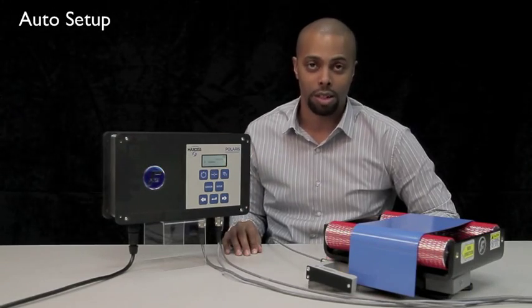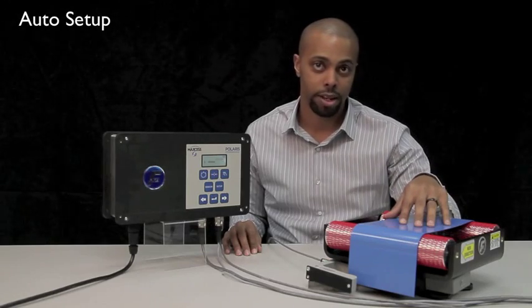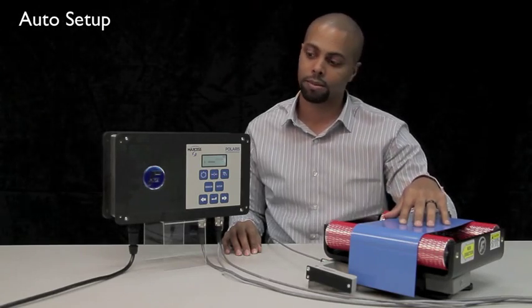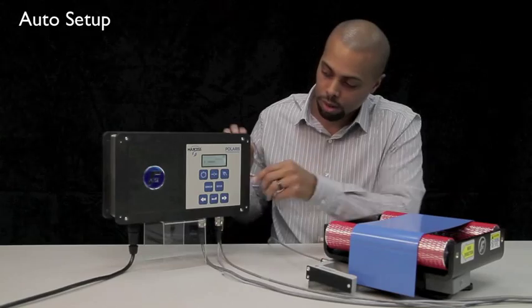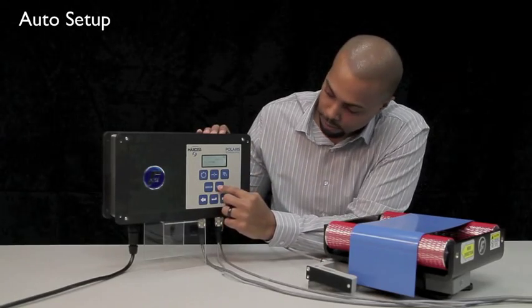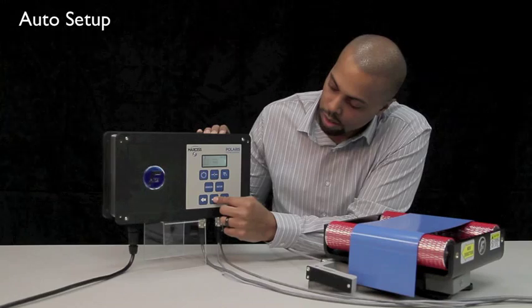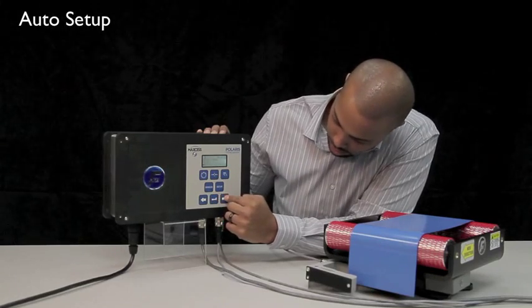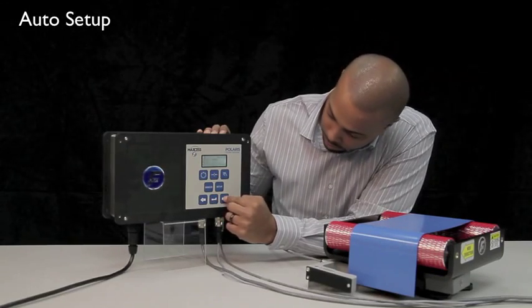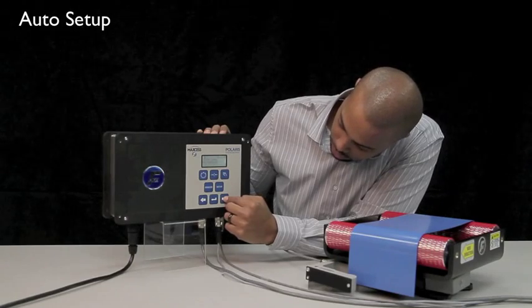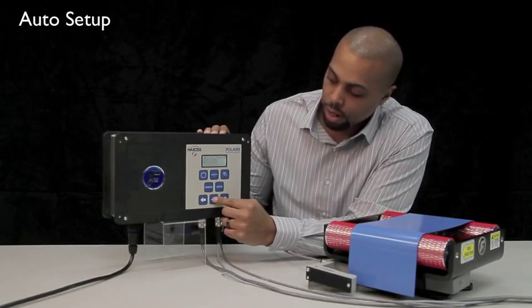Now I'll perform an auto setup using this blue strip as our material with tension. To perform the auto setup, press the setup button and press enter to select the basic menus. Next, press your right arrow until you see auto setup and press enter.